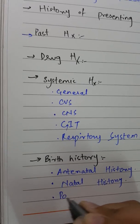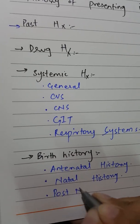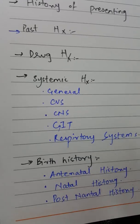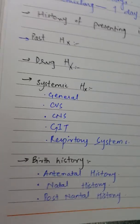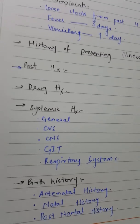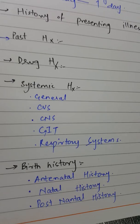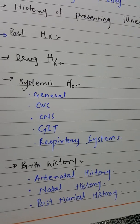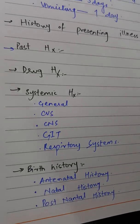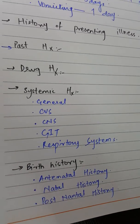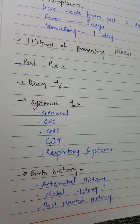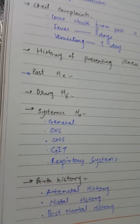Then comes postnatal history, in which you ask about the health of the baby just after birth. This includes whether the baby was cyanosed, jaundiced, the cry of the baby, and any difficulties in breathing. You also ask if the baby had any birth injuries, blood transfusions after birth, or any diseases suffered directly after birth.